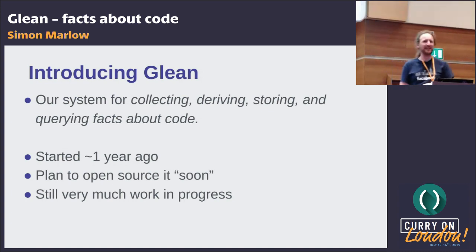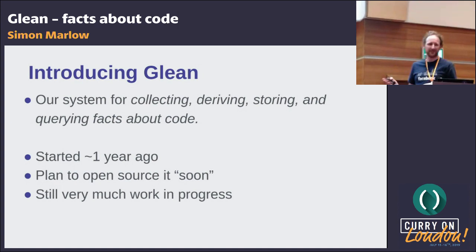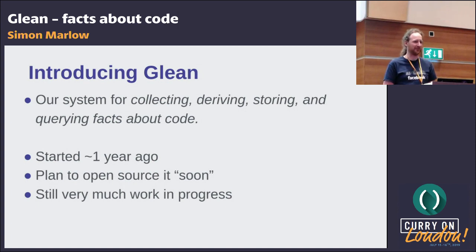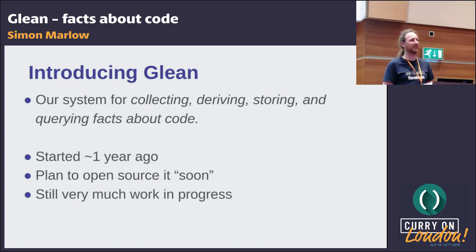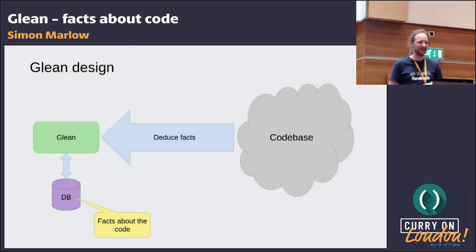This brings me to Glean, a system we are building with the goal of eventually solving these problems. I'm not going to pretend we've solved the problems at this point, but we think it's a promising approach. Glean is our system for collecting, deriving, storing, and querying facts about code. We started the project about a year ago. We are very much planning to open source it — not quite there yet, but it's definitely a goal. What we have so far still has many useful use cases.